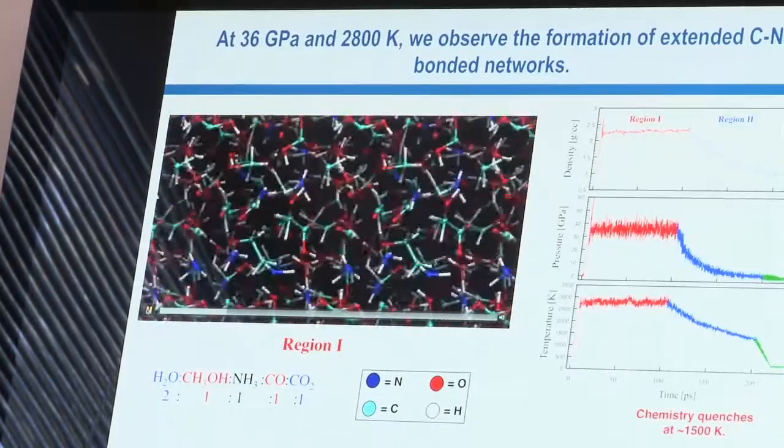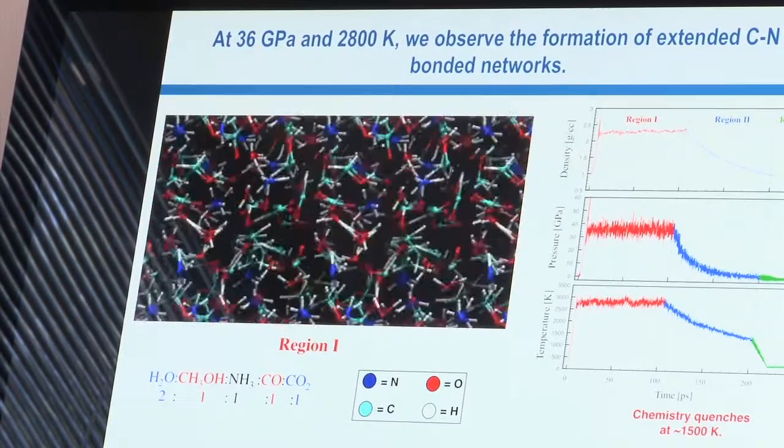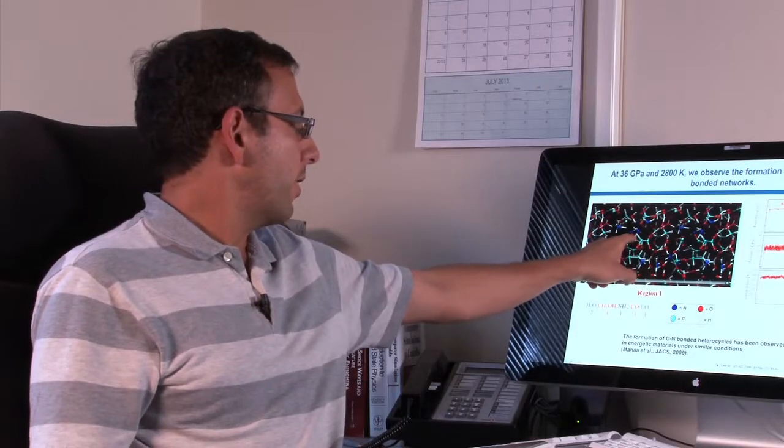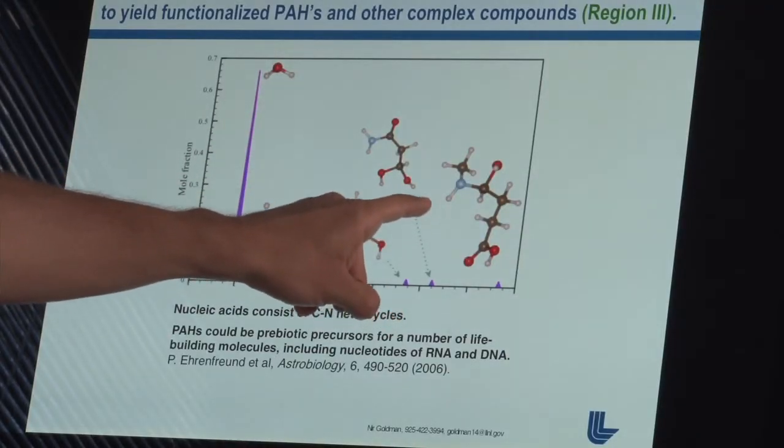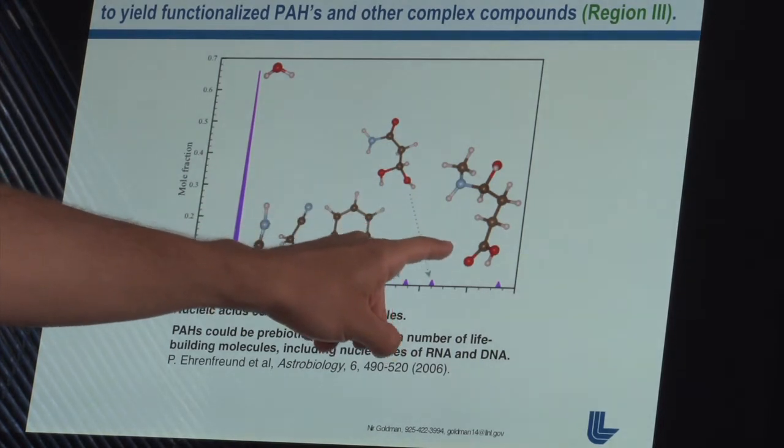Everything's zipping around right now because the temperature has gotten very high. What you see here are these light blue atoms bonded together. We see the beginnings of carbon-carbon bonds forming and carbon-nitrogen bonds forming. These are the beginnings of the building blocks for life-building materials, like amino acids.